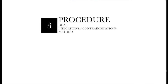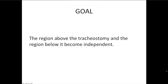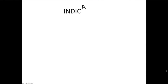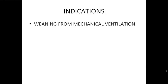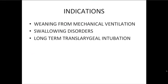Concerning the method, we will see the goals, indications, contraindications, and the procedure itself. The goal of tracheostomy is to make independent the region above and the region below the tracheostomy. Indications include: weaning from mechanical ventilation, management of swallowing disorders, long-term intubation usually over seven days, and laryngeal obstruction such as a tumor.